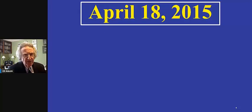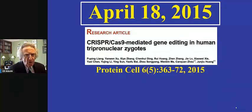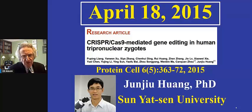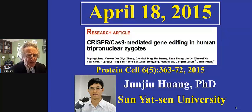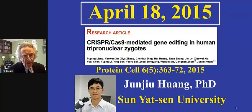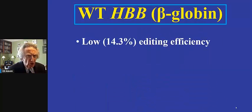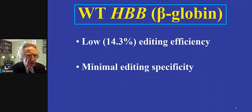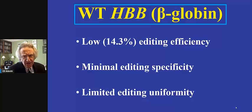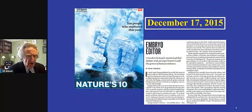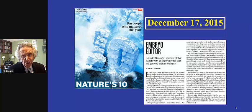The story as regards our discipline begins on April the 18th, 2015, when on the pages of Protein Cell, Professor Huang from Sun Yat-sen University published a paper wherein he attempted to edit human zygotes, albeit tripronuclear zygotes, which would be non-viable and non-transferable. He focused on the beta-globin gene and secured low editing efficiency, minimal editing specificity, and limited editing uniformity — hardly a major scientific success. Nevertheless, because of the novelty of it all, Nature did include it in its 10 People Who Matter This Year issue, which came out on December the 17th of 2015.